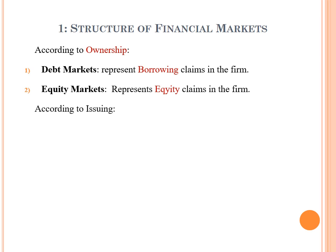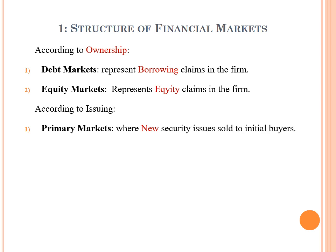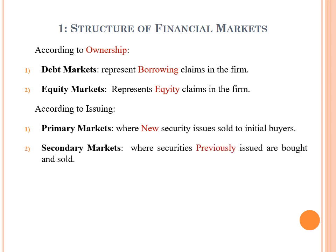The second categorization is according to issuing. Primary markets are where new securities are sold to initial buyers through what are called IPOs — initial public offerings. Secondary markets are where securities previously issued are bought and sold.